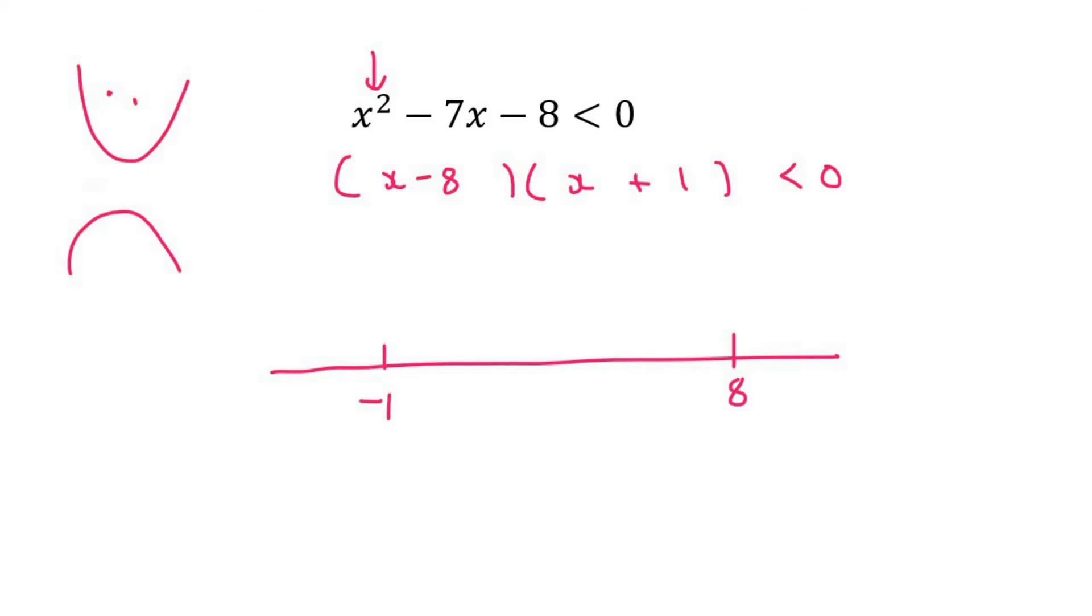When the number in front of the x² is positive, which in this case is just a positive 1, then it's happy. Why? Positive means happy, negative means sad. Positive happy, negative sad. So we draw a little smiley face going through the two numbers we just looked at.